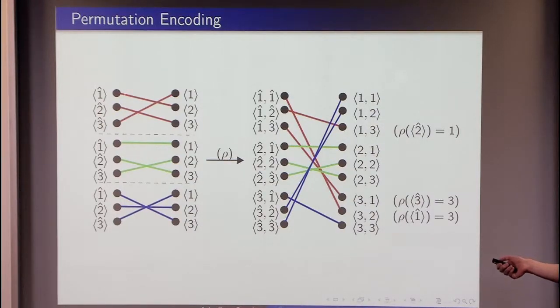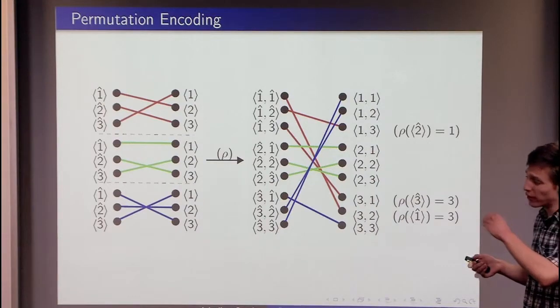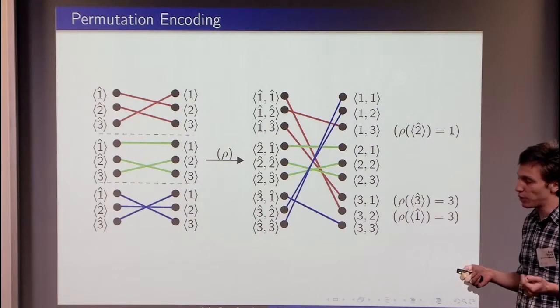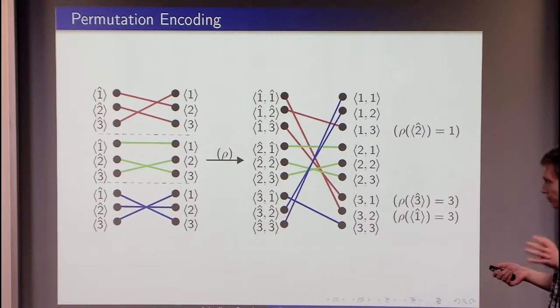When we are using this recursive schema, we are starting from, let's say, k trivial one element permutations and we are merging them recursively. Then, on each level of this recursion, we are encoding a constant fraction of k additional pieces of information and we have a logarithmic number of levels of this recursion.